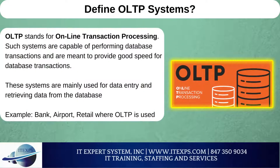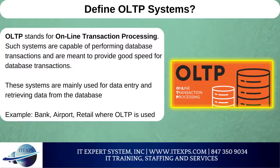Define OLTP systems. OLTP stands for Online Transaction Processing. Such systems are capable of performing database transactions and are meant to provide good speed for database transactions. These systems are mainly used for data entry and retrieving data from the database. Examples include banks, airports, and retail, where OLTP is commonly used.